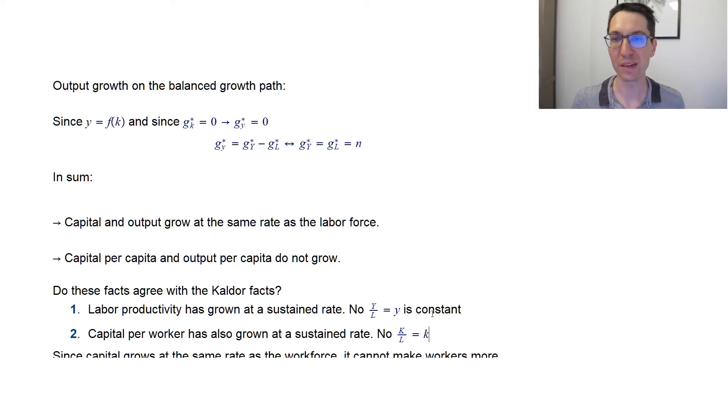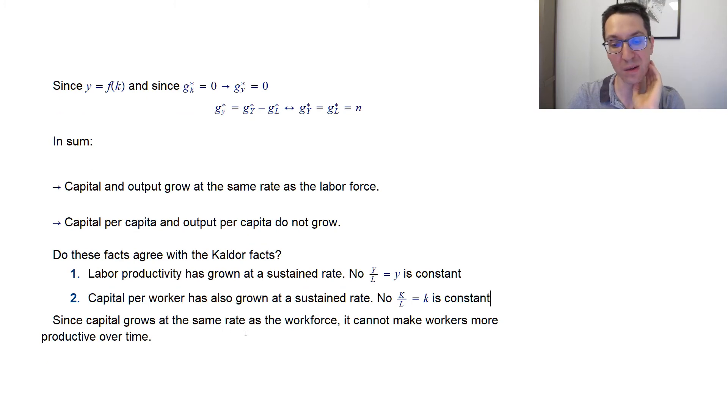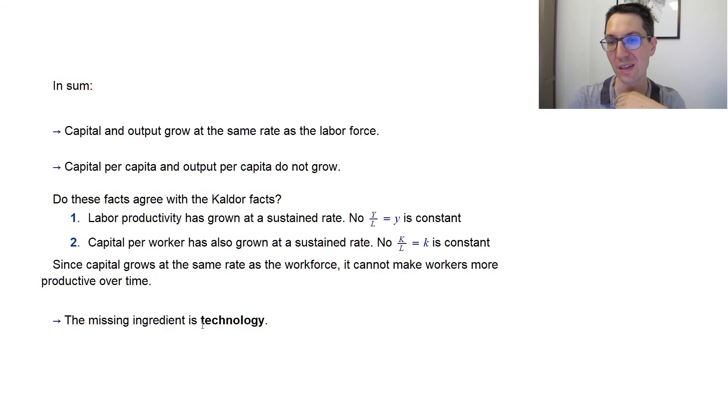One argument we could make to save the model is to argue that actually no industrializing economy is ever on the balanced growth path. So all these facts that we're describing don't apply because they're catching up, for instance. However, that's not a very strong argument. And maybe we can do better than that. So here, let me conclude. Since capital grows at the same rate as the workforce, then it cannot make workers more productive over time. So instead of claiming we're not on the balanced growth path, what maybe we need is some extra ingredient. And you may remember that this missing ingredient is going to be technology. If we invent stuff, then workers become more productive. And this is what we're going to see now.